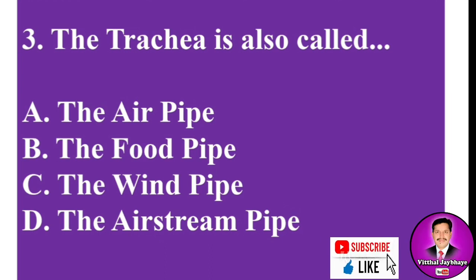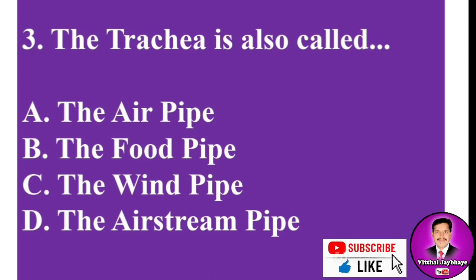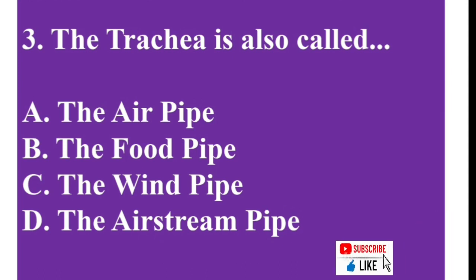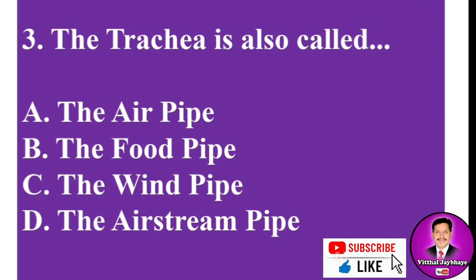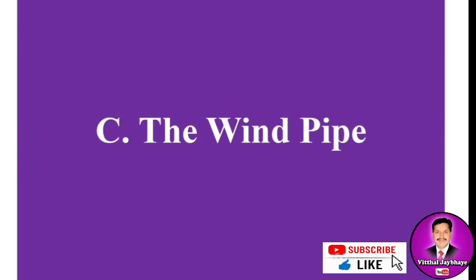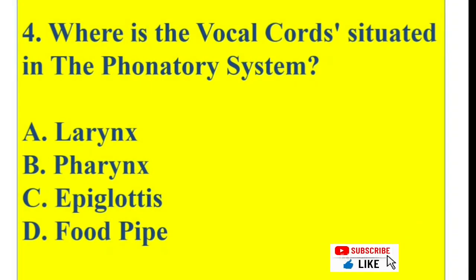MCQ number three: The trachea is also called ___. Options: A) the air pipe, B) the foot pipe, C) the windpipe, D) the airstream pipe. The correct answer is C — the windpipe.